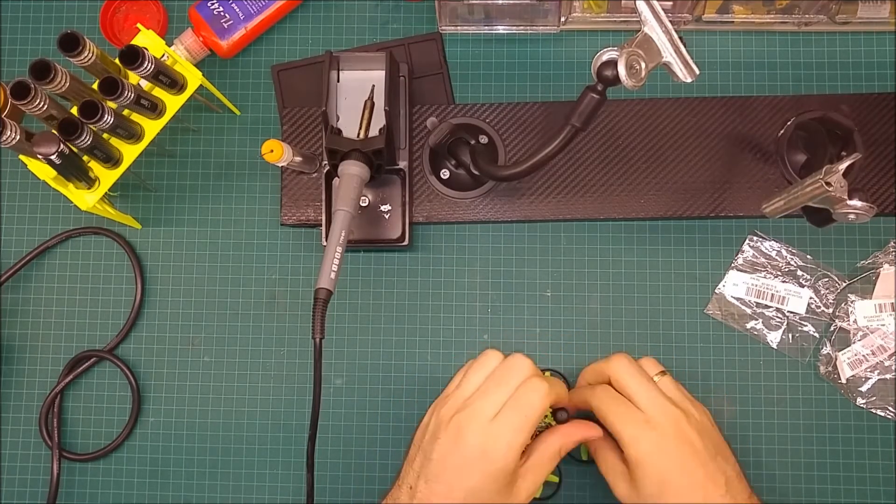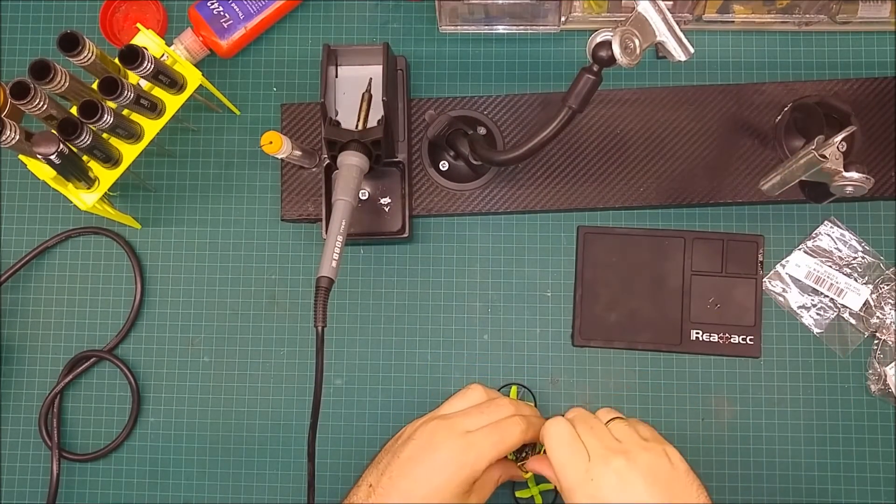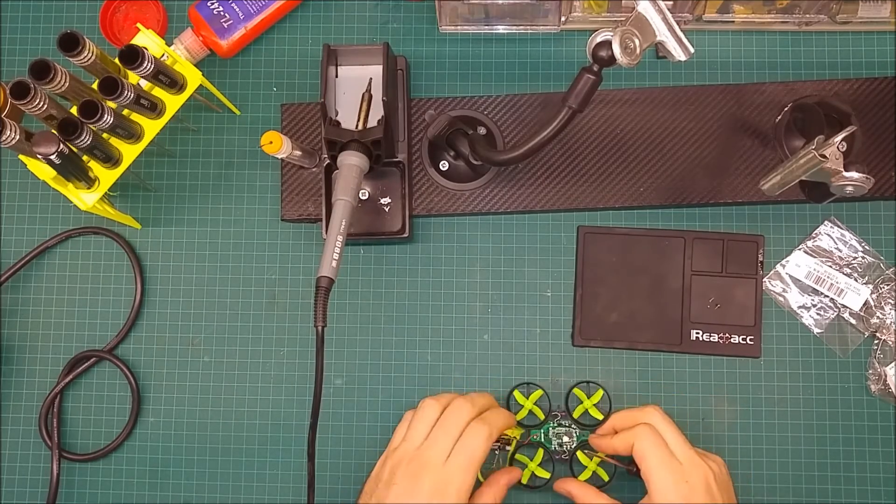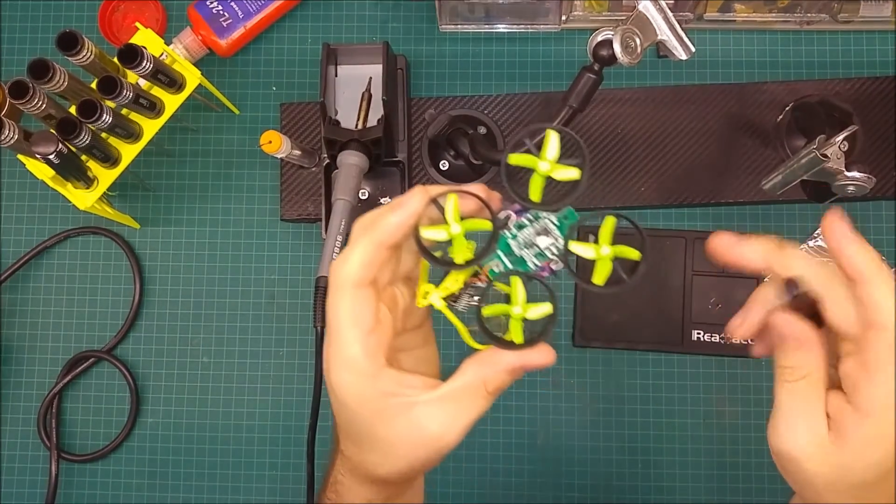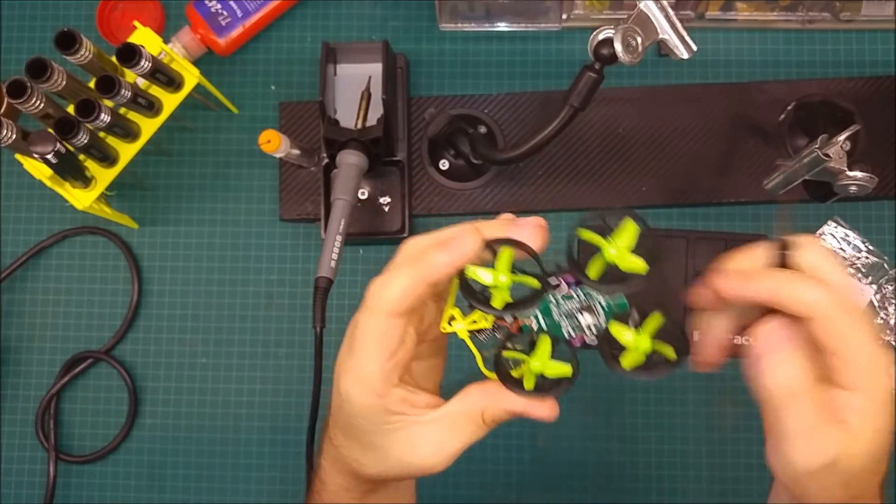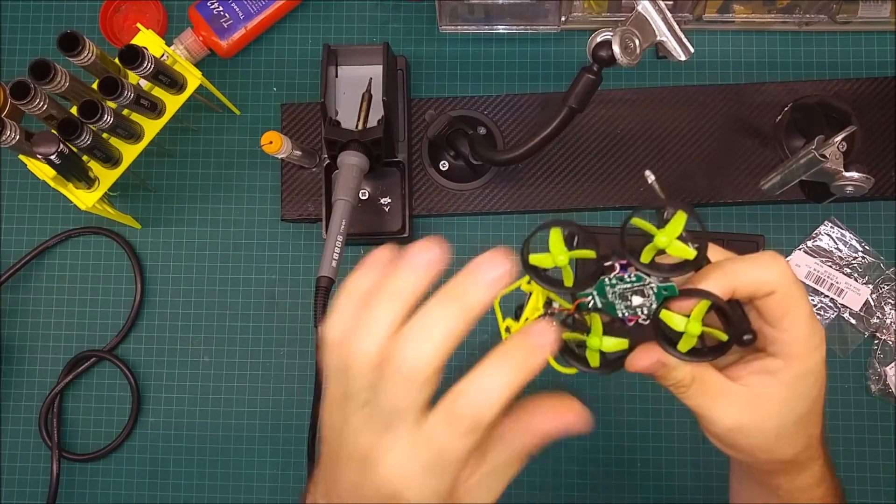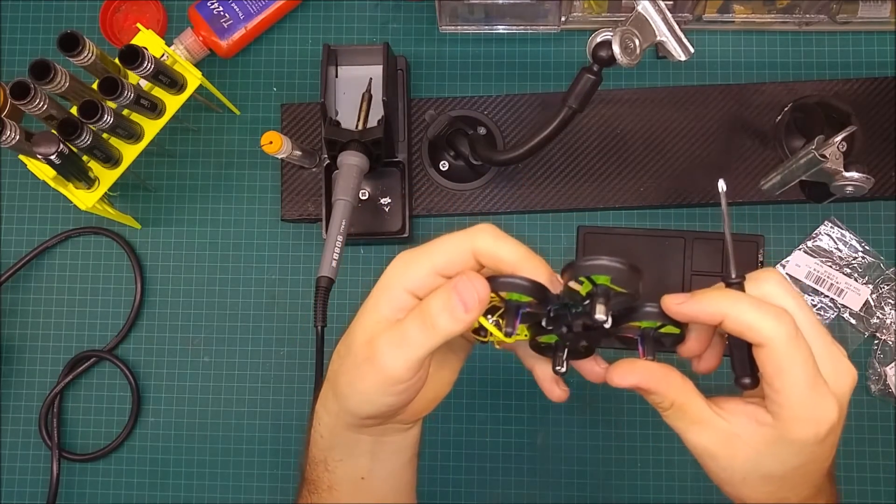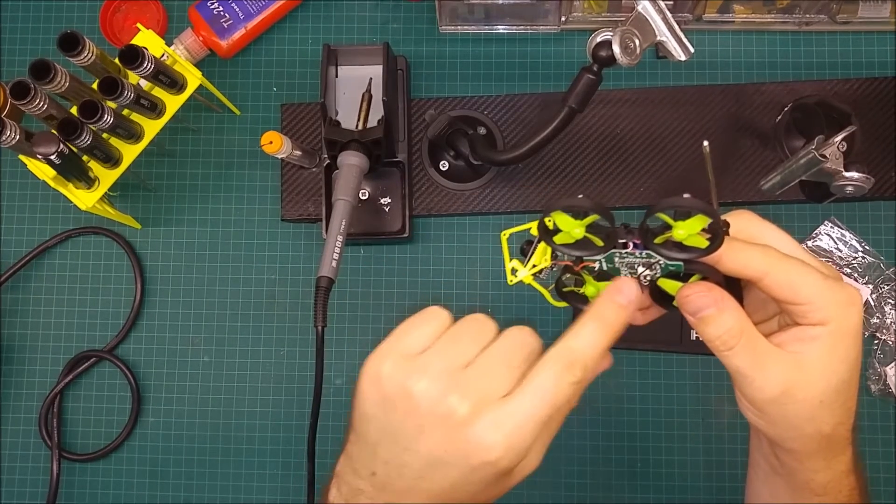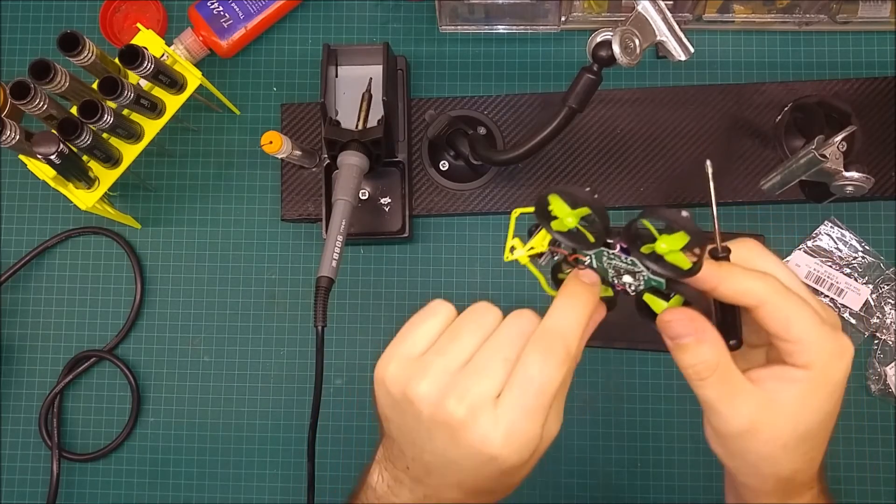As you can see here, this is where the motors connect to the board, soldered in. So to remove, you need to first unsolder these wires, put new motors inside, then we'll solder in.